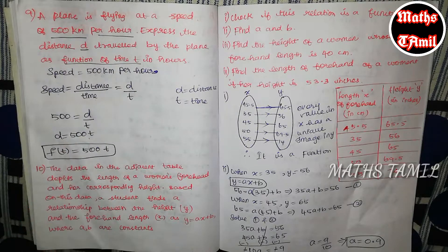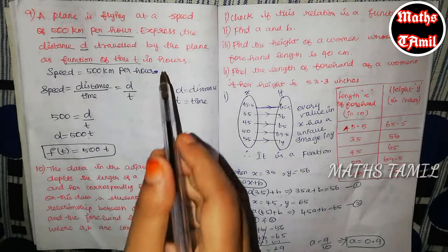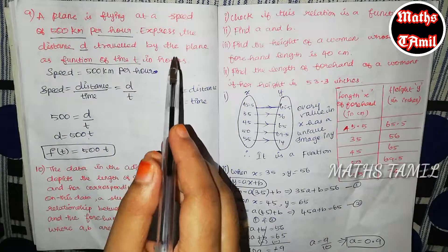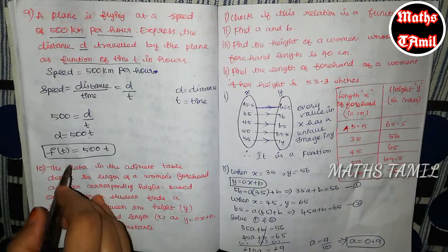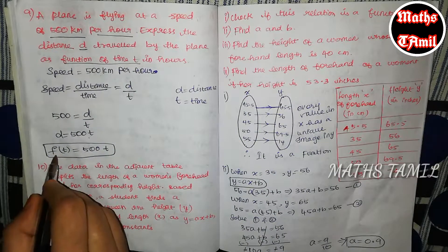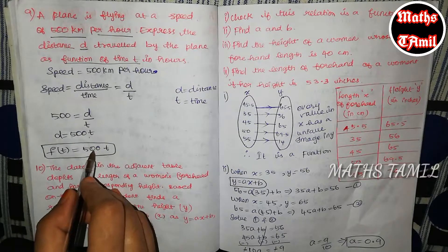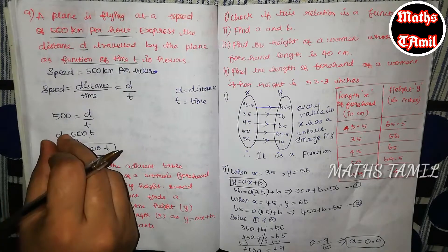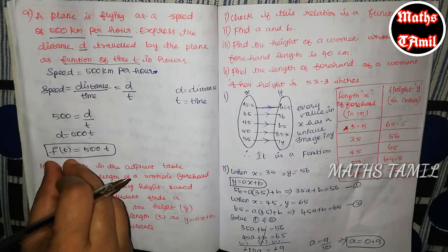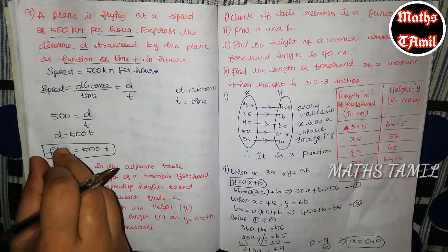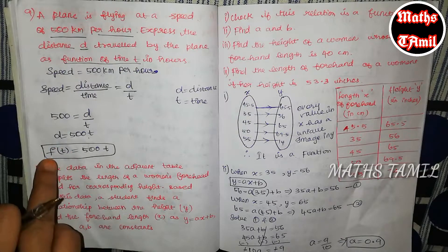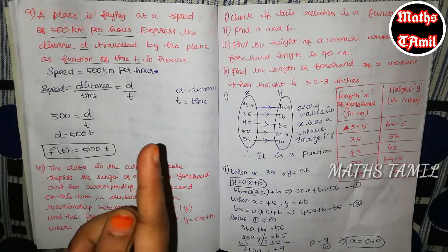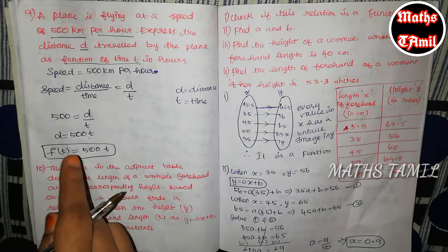So, the distance d traveled by the plane as a function of time t: f of t is equal to 500t. This is the function for distance at time t.